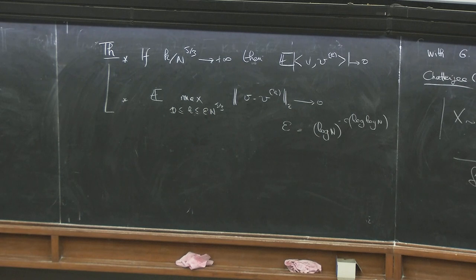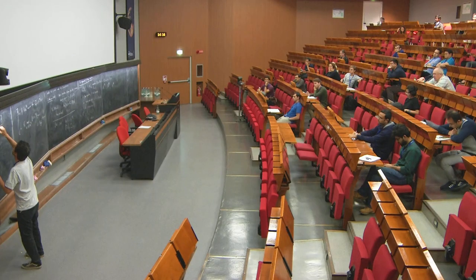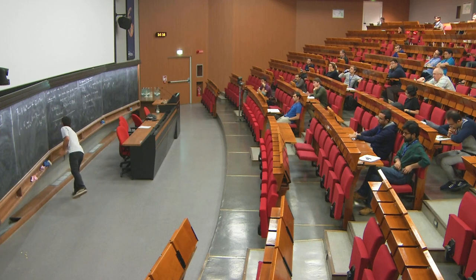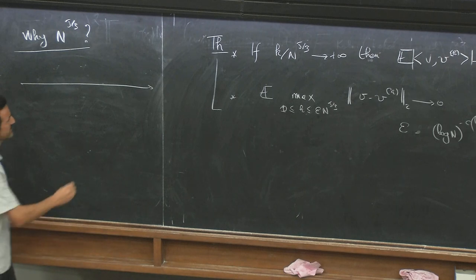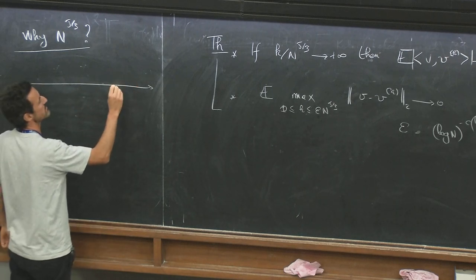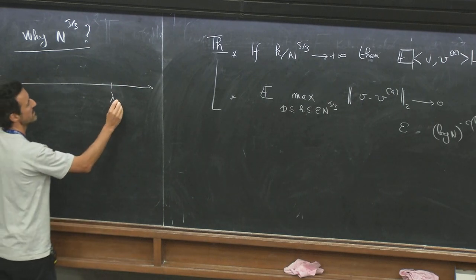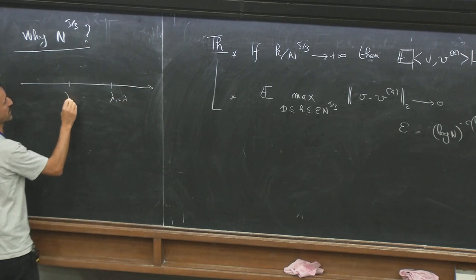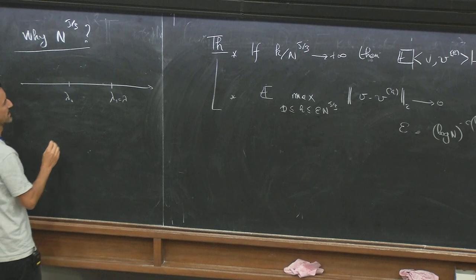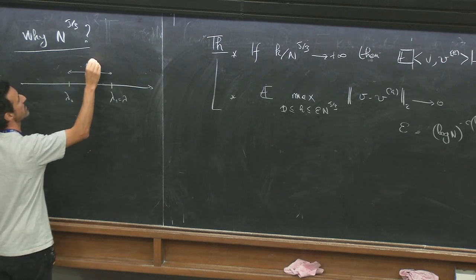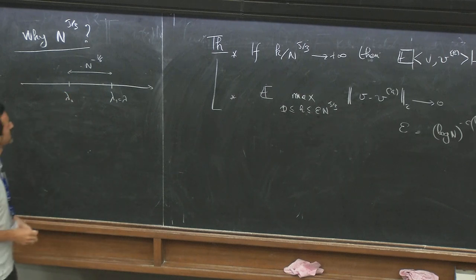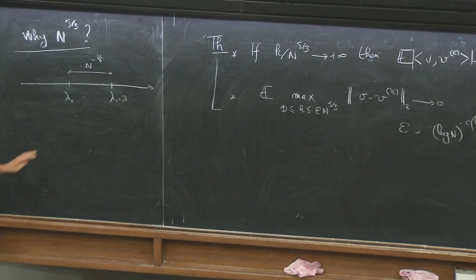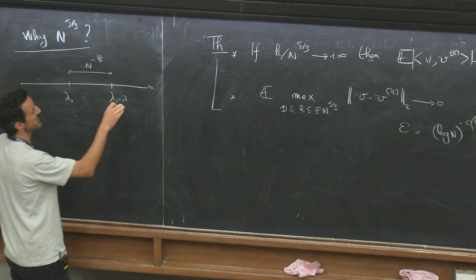So why n^{5/3}? It's not hard to guess — let's make a picture. Here I represent the eigenvalues of x. I have the largest one, lambda_1, and the second largest, lambda_2. The distance between them will typically be of order n^{-1/6} — for GOE for example, and it's known in greater generality thanks to the work of Erdős, Yau, and co-authors. So this is roughly at 2√n up to some fluctuations.